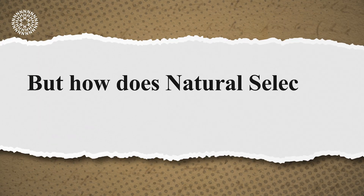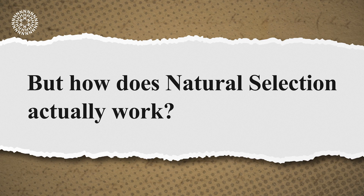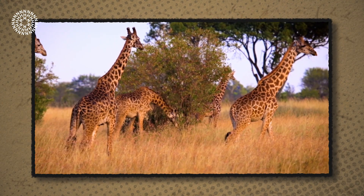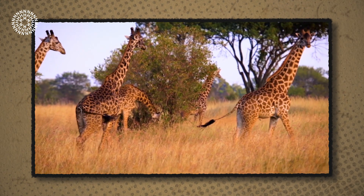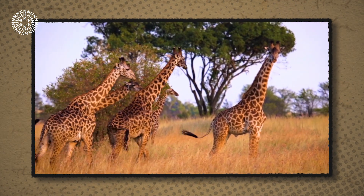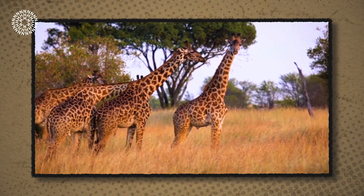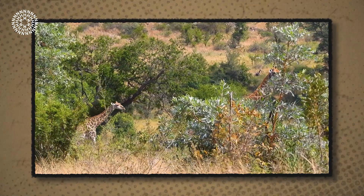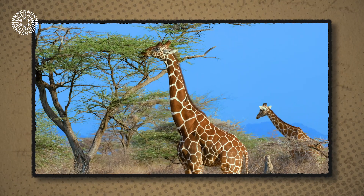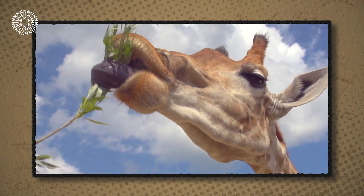But how does natural selection actually work? To explain this, we're going to need an example. Think about a group of giraffes on the African savannah. Giraffes as a species are well suited to survive in that environment — they're well camouflaged, their long necks allow them to reach the tall trees, and they have long tongues to strip leaves from branches.